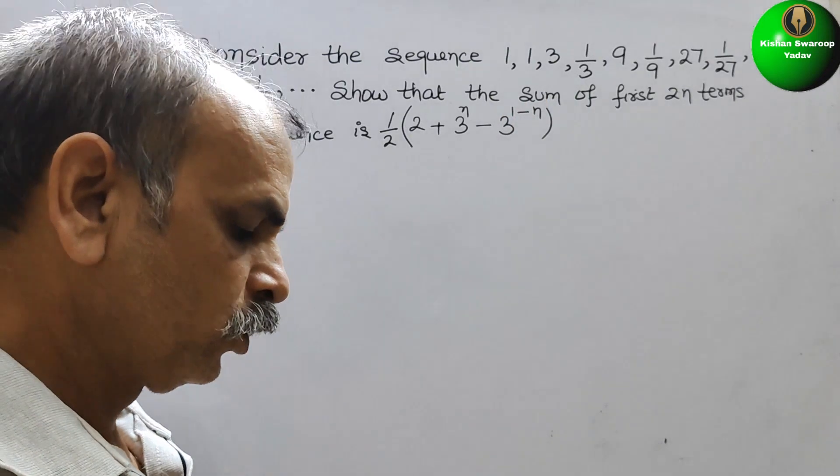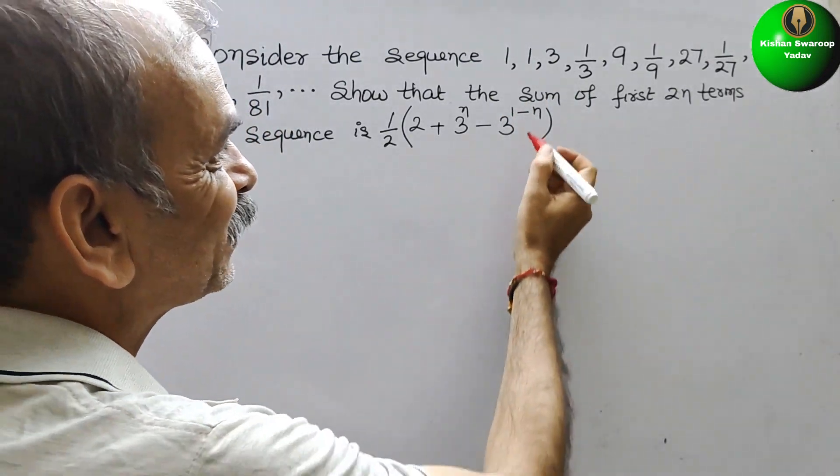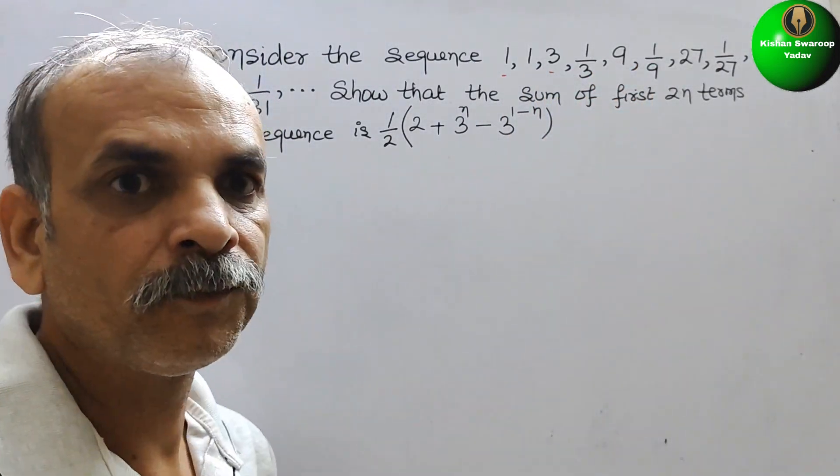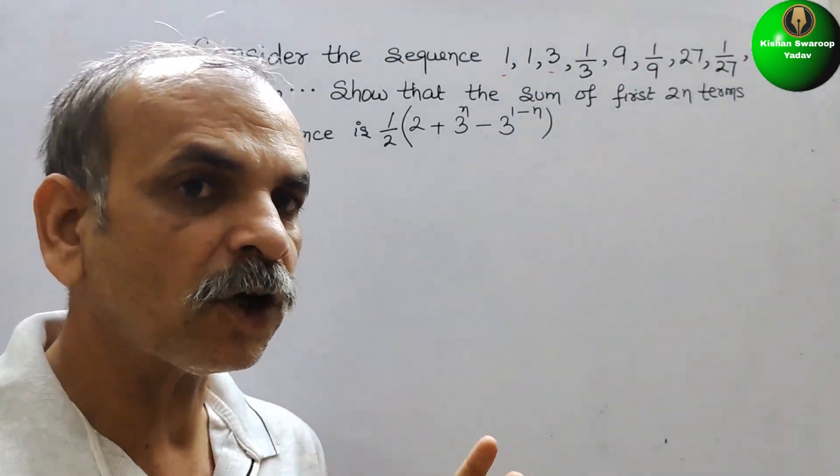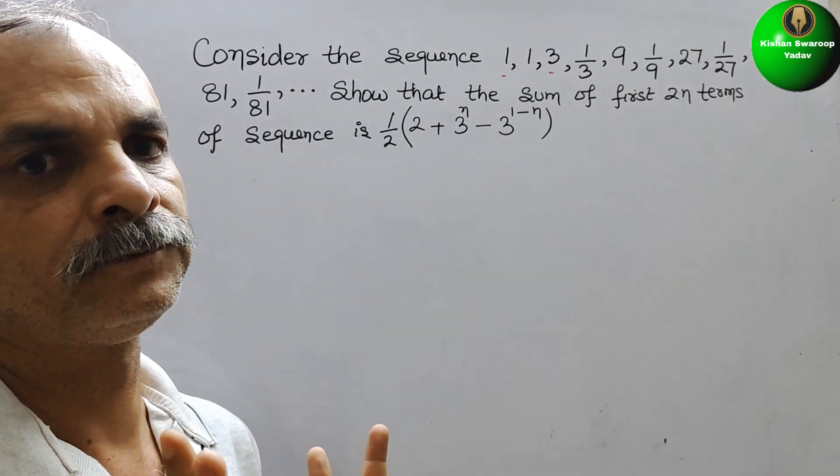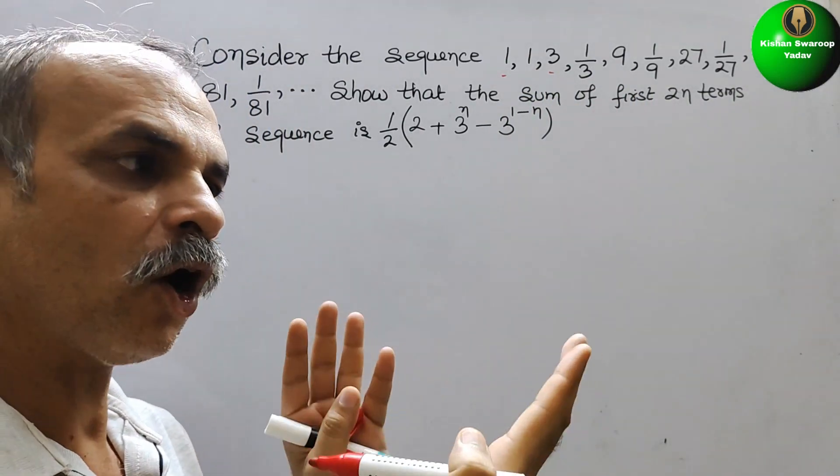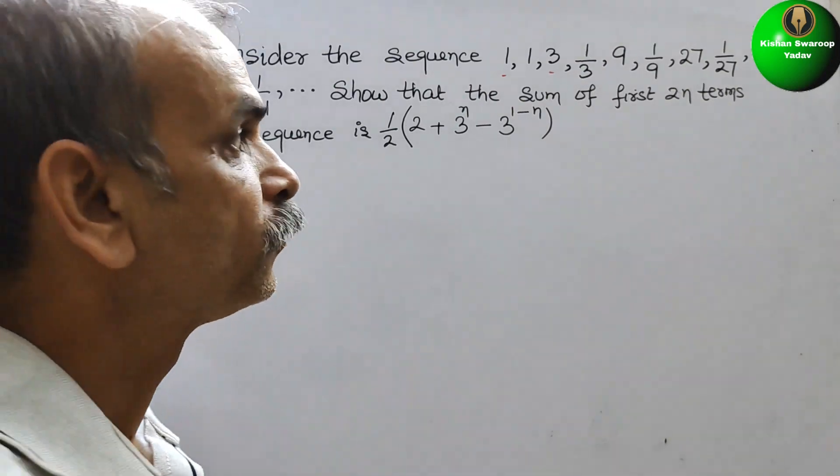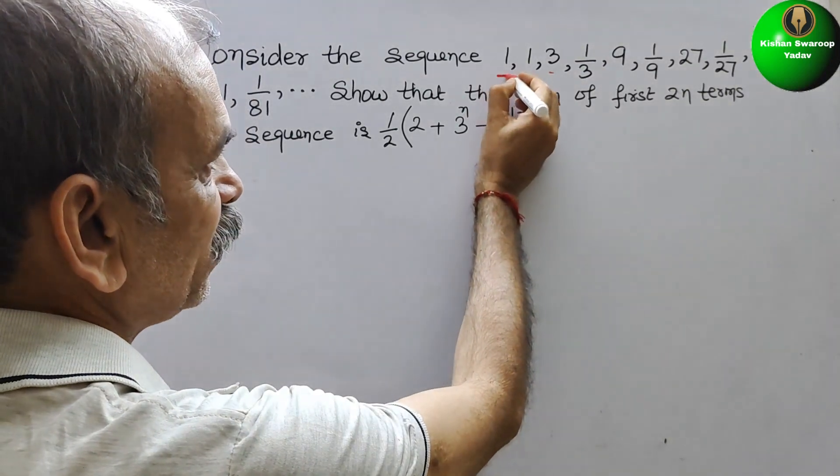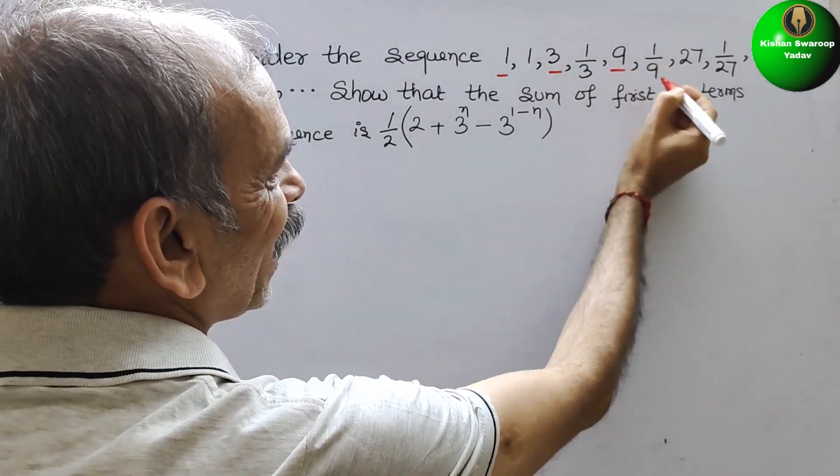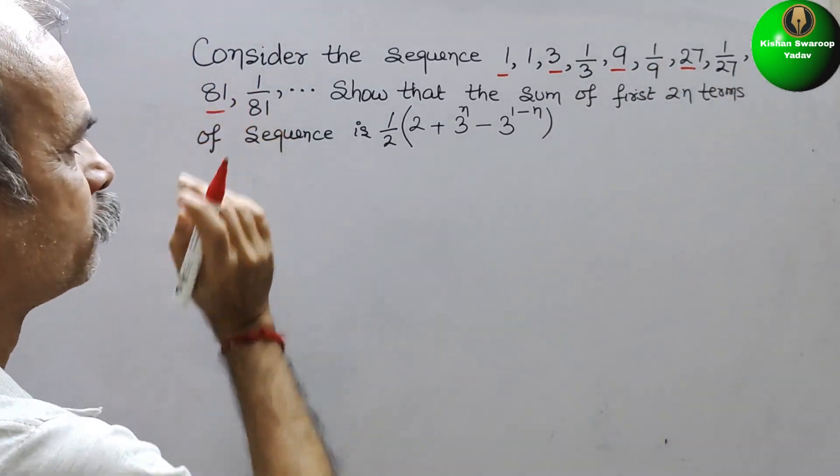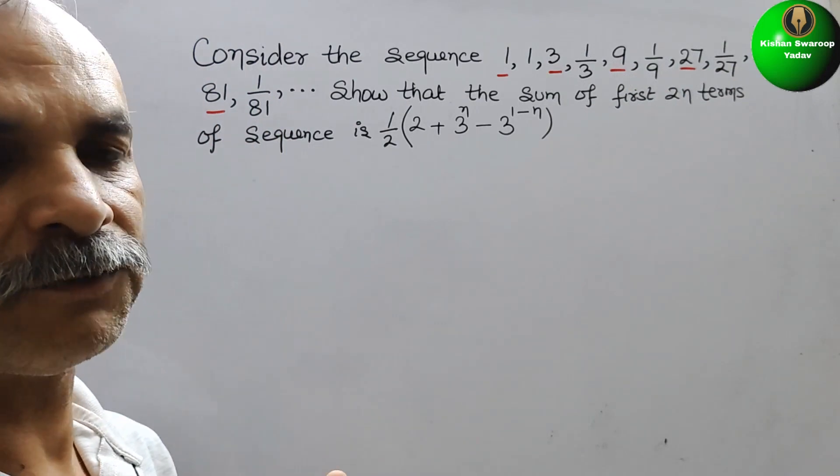Now if you see this sequence, how it will be? It is a combination of 2 sequences. First is your odd places, second is your even places. So the odd places are 1, 3, 9, 27 and 81. So this is first sequence.